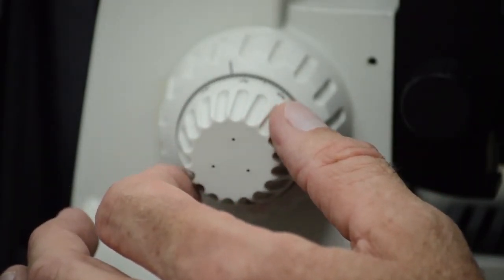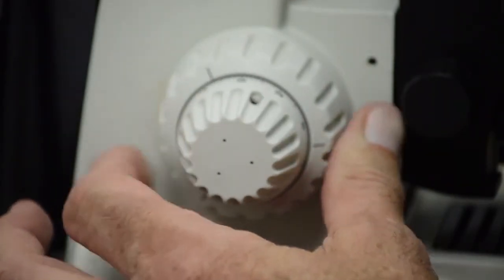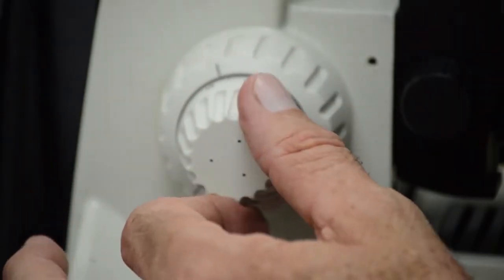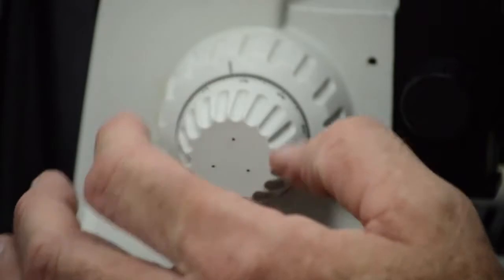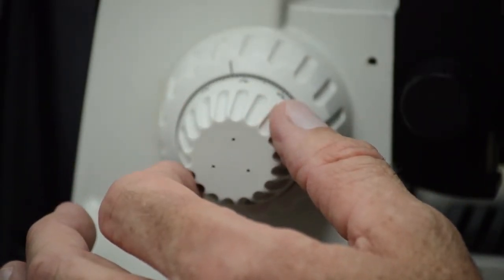When working with the low powers, which are the short objectives, use the coarse focusing knobs. When working with the high dry, 40x, and the oil objectives, 100x, use the fine focusing knobs.